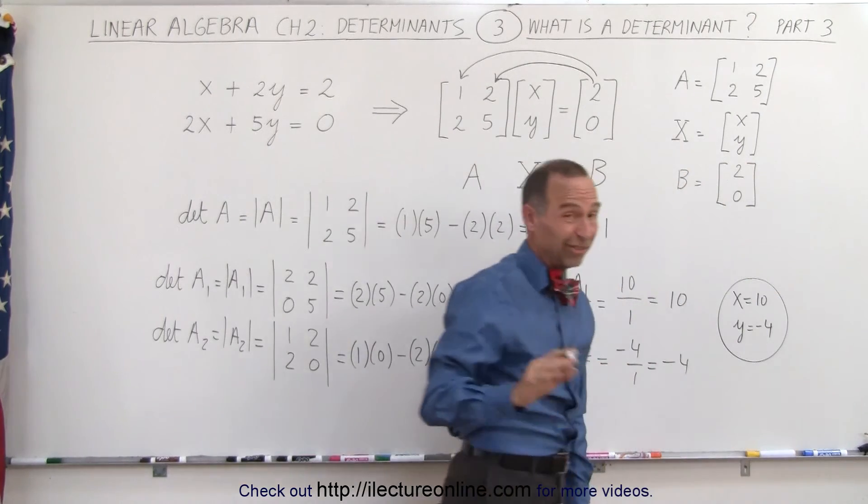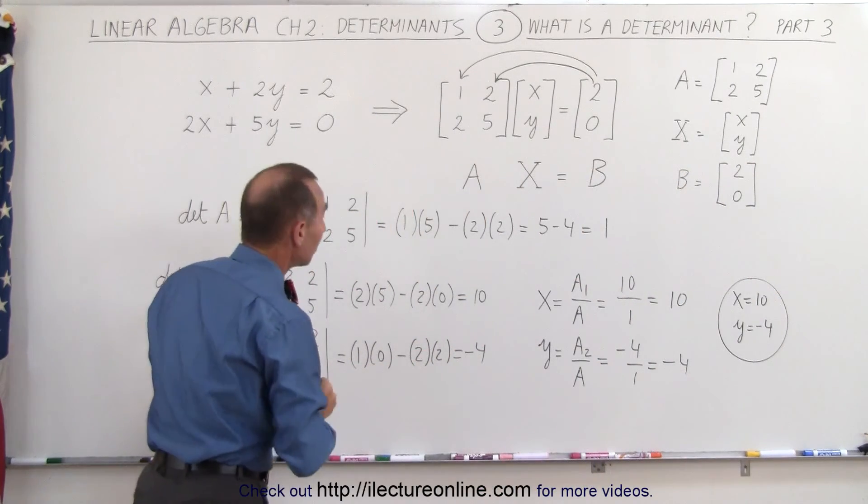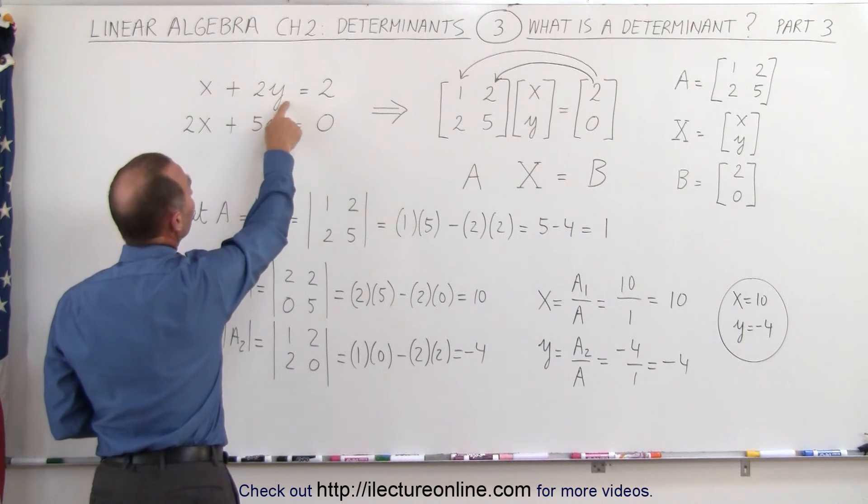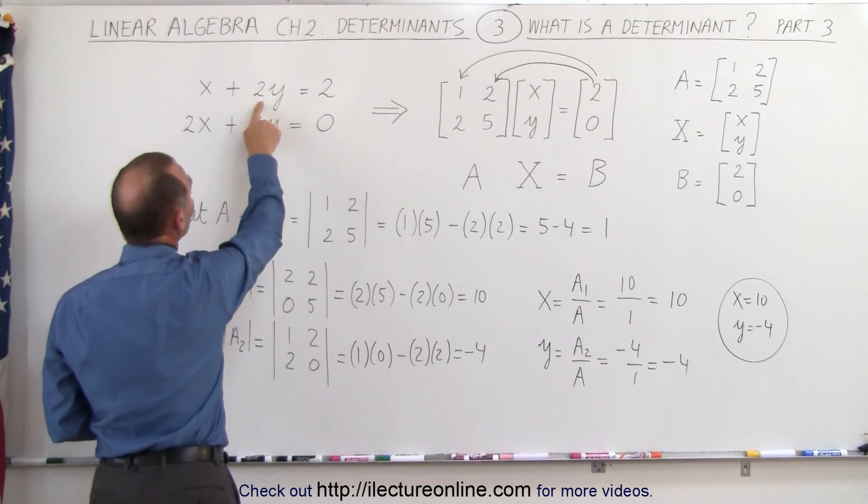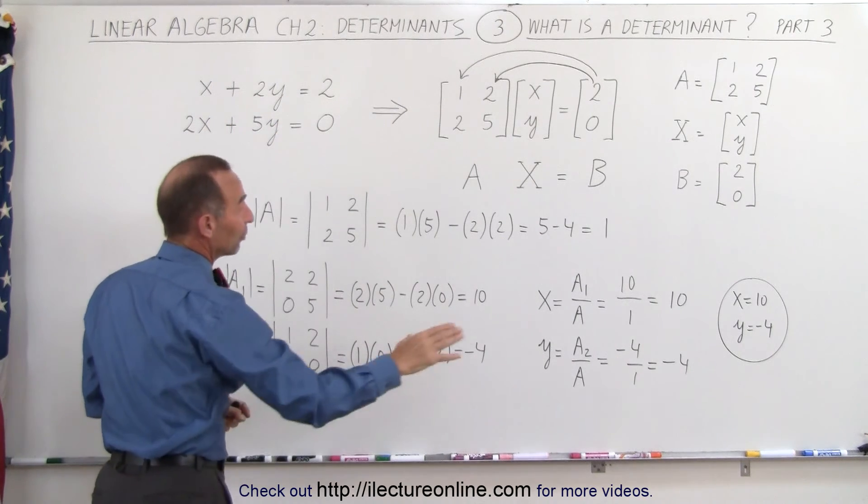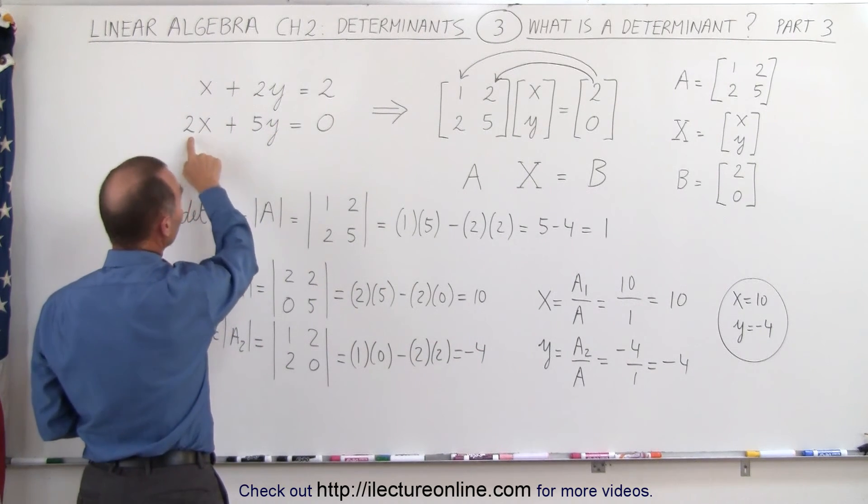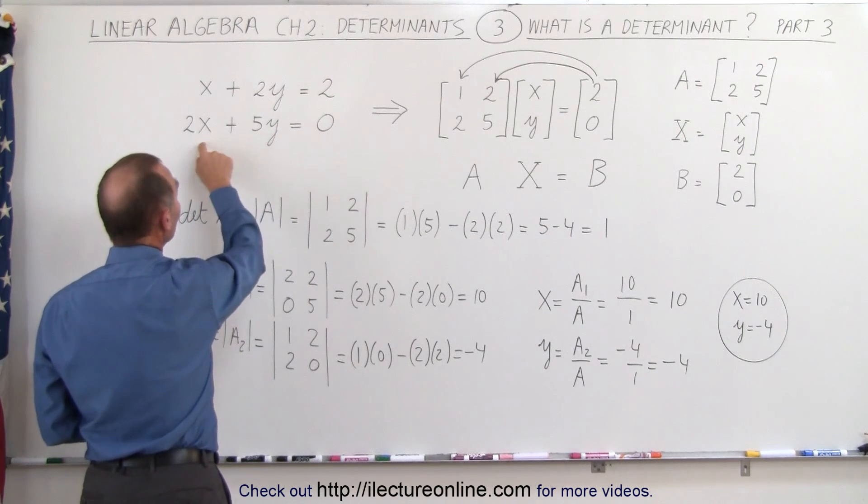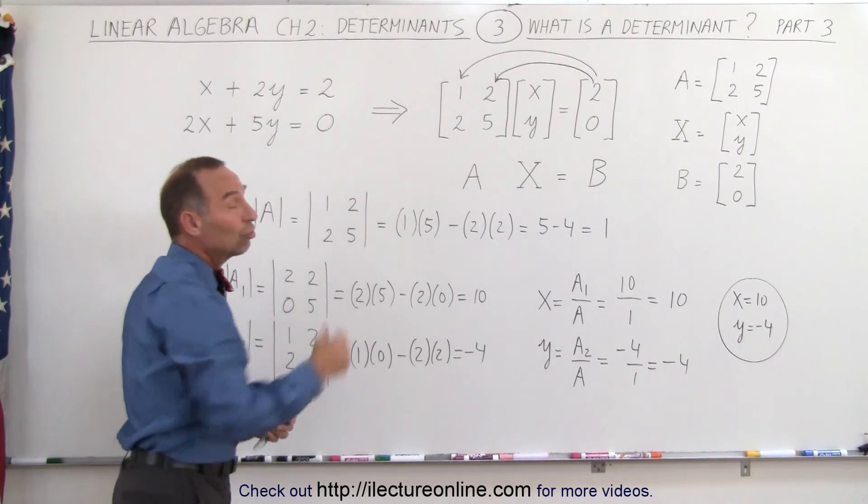Now we can do a quick check. Plugging in those values: 10 plus 2 times negative 4 equals 10 minus 8, which is indeed 2. For the second equation: 2 times 10, which is 20, plus 5 times negative 4, which is negative 20, equals 0. It checks.